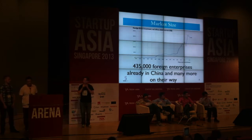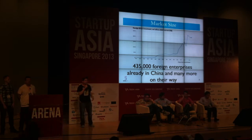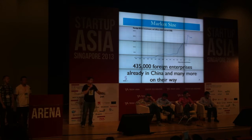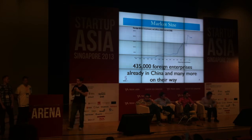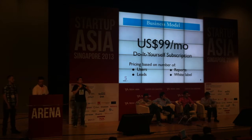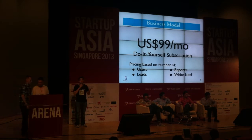How does the market look? We're currently targeting Western businesses — US, European, Singapore companies, and China. There are 435,000 businesses currently registered in China that are foreign. There's also a secondary market of companies not yet in the Chinese market that are trying to get in. We're an online sales tool with pricing levels based on number of users, number of leads, number of reports run, and white label reporting for agency users.